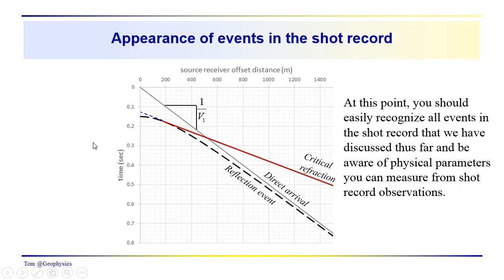This should be a familiar-looking plot. You know that we can obtain the velocities by calculating the inverse of the slope. We take the inverse of the slope of the direct arrival to get V1, and the inverse of the slope of the critical refraction to get V2. If we can see it, this point of tangency will give us xmin.